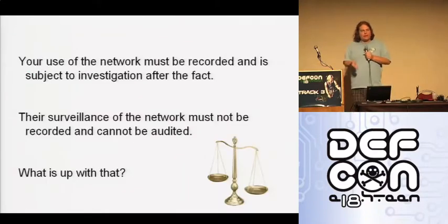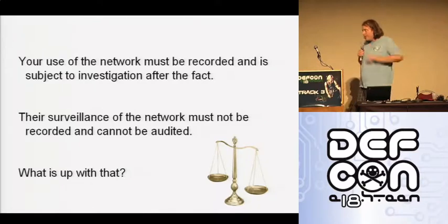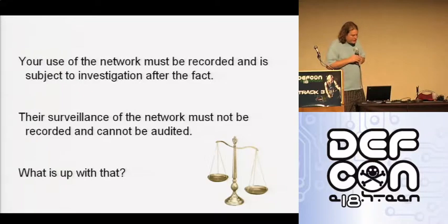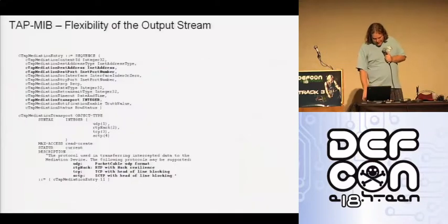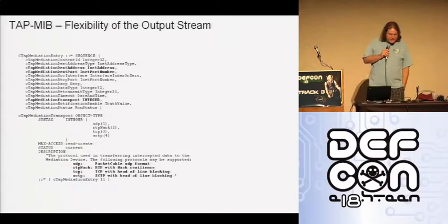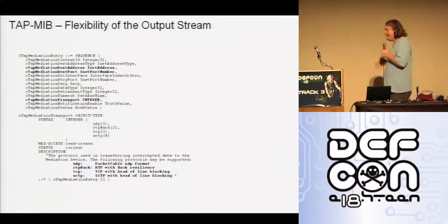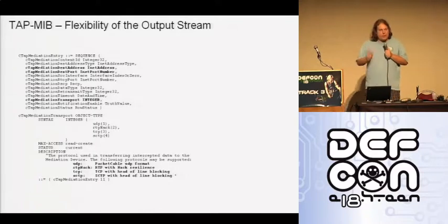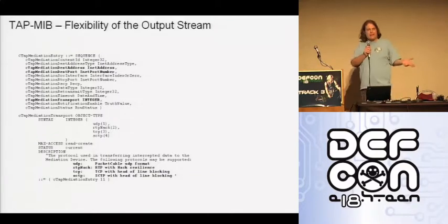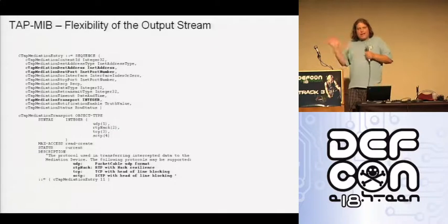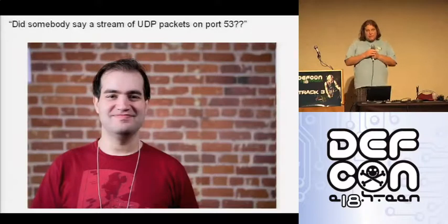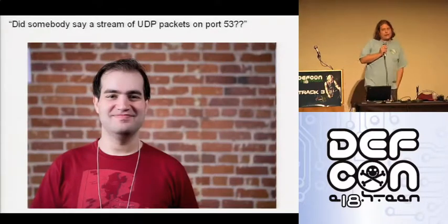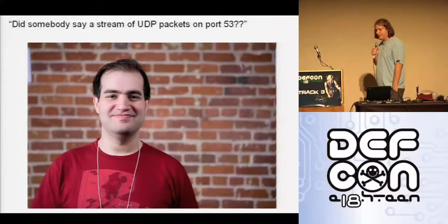I'll explain later exactly why they designed it that way and how they can design it differently. Another notable feature of this system is that the output stream is very flexible. Once you've provisioned your wiretap, you can send the output to any destination on the global internet over any port using four different encapsulation schemes — two UDP-based, one TCP, and one SCTP-based. You can send it anywhere and make it look like anything. For example, you can send it on port 53 as UDP packets so it looks like DNS traffic.